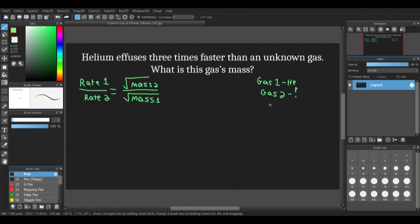Now, we're going to figure out the rates first. The rate of helium, we're told, is 3 times faster than the rate of the other gas. So we're going to make the rate of gas 1, or the rate of helium, equal to 3. And the rate of gas 2, or our unknown one, equal to 1, because that shows helium is 3 times faster than that unknown gas.